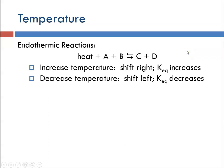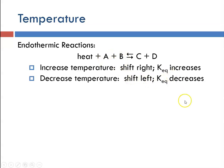If we decrease the temperature for an endothermic reaction, the equilibrium will shift to the left, meaning there is more reactant concentration. So the value of Keq will decrease, remembering that reactants are in the denominator of the equilibrium expression.